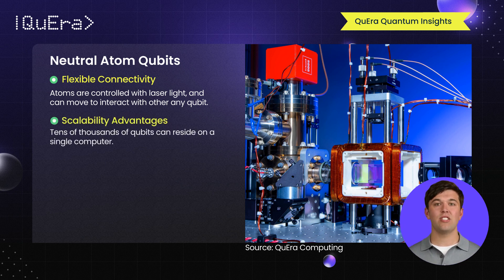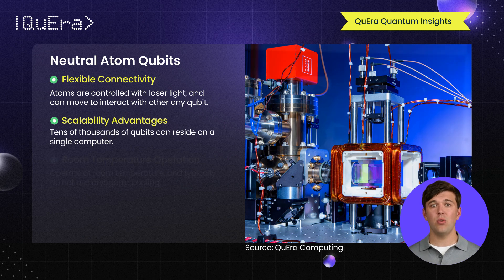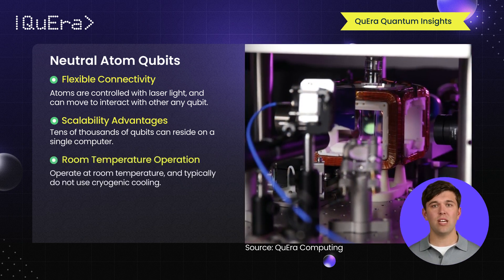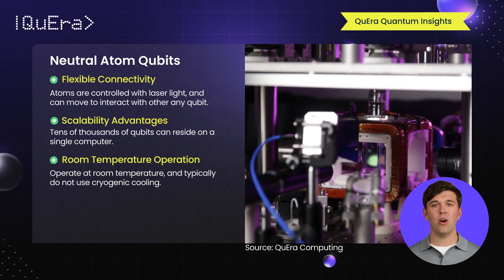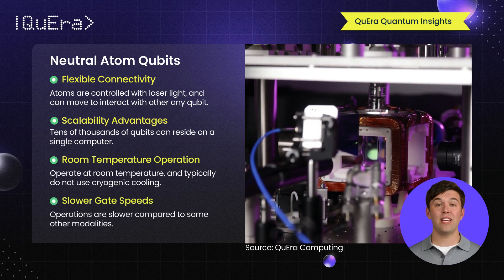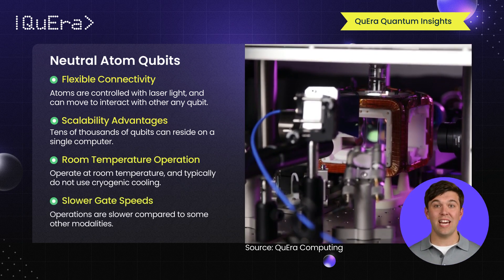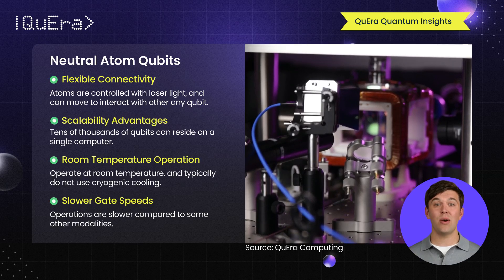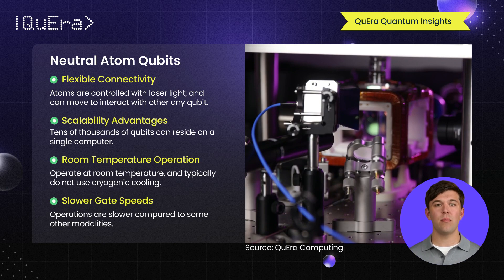One of the biggest advantages of this modality is its scalability — tens of thousands of qubits can be controlled in a single computer. Additionally, neutral atom systems operate at room temperature and thus don't require cryogenic cooling. While gate speeds are modest compared to superconducting qubits, the scalability and potential for large-scale quantum computation make this an attractive option for the future. Quera and Inflection are among the companies developing neutral atom quantum technology.